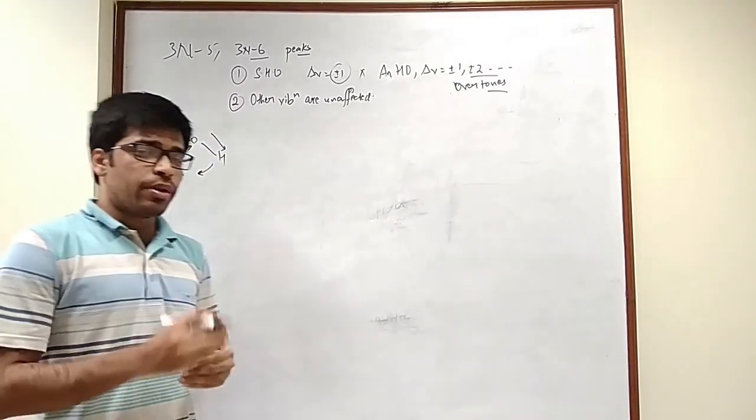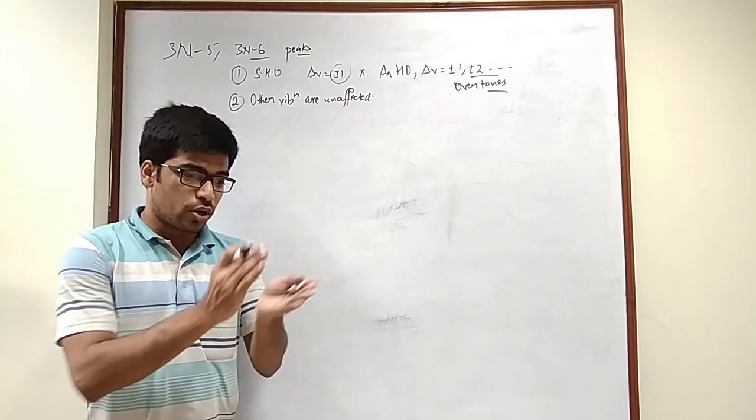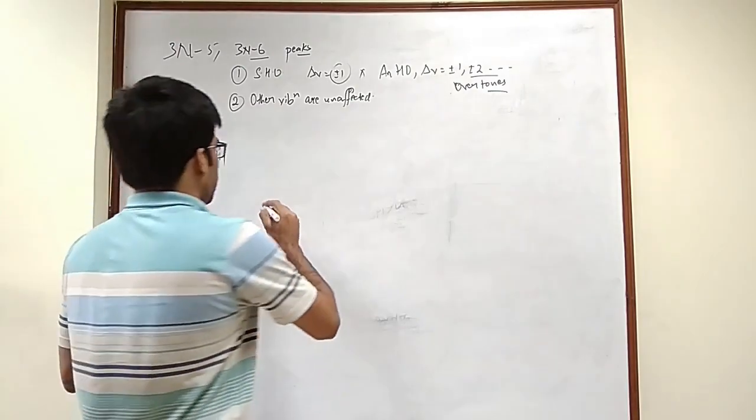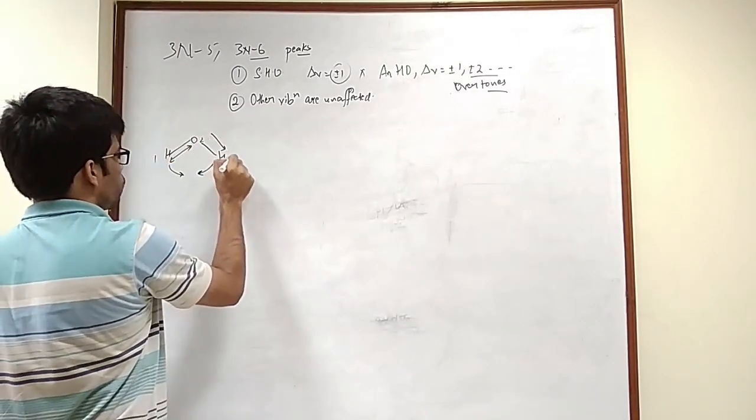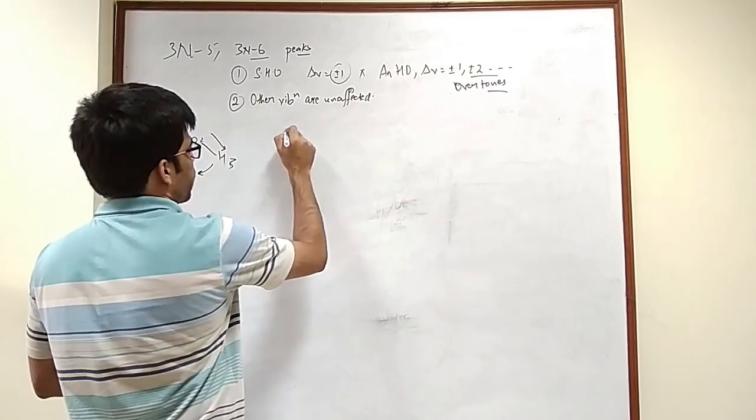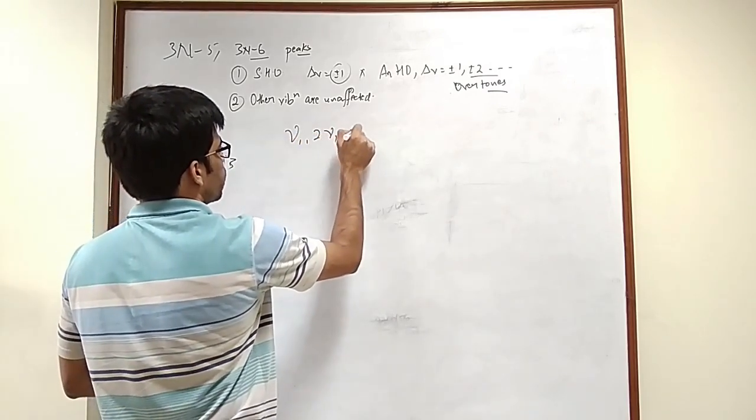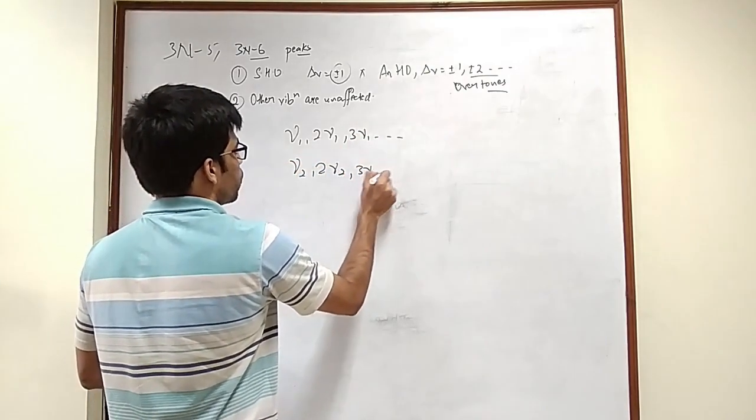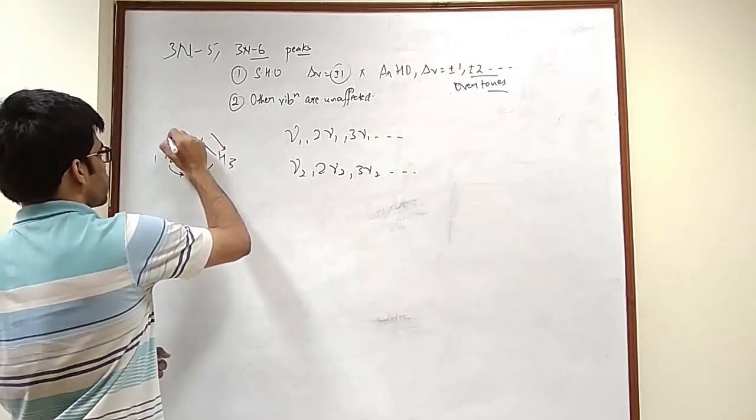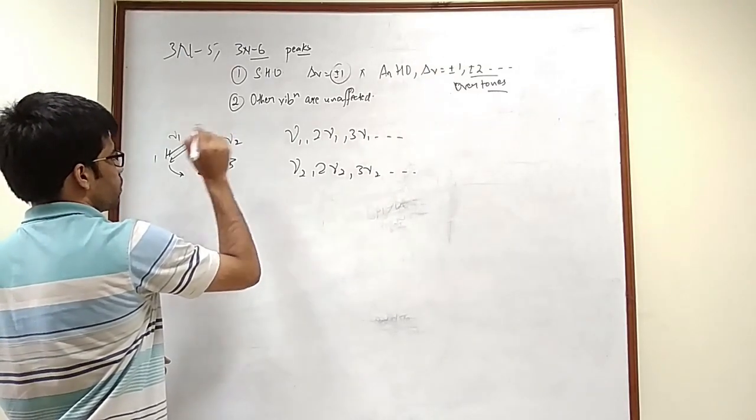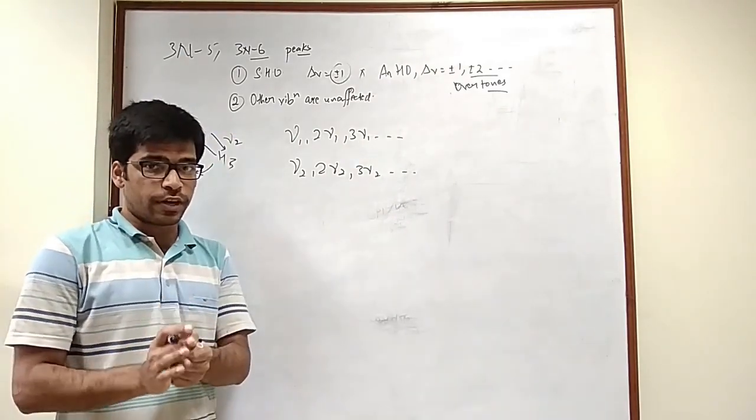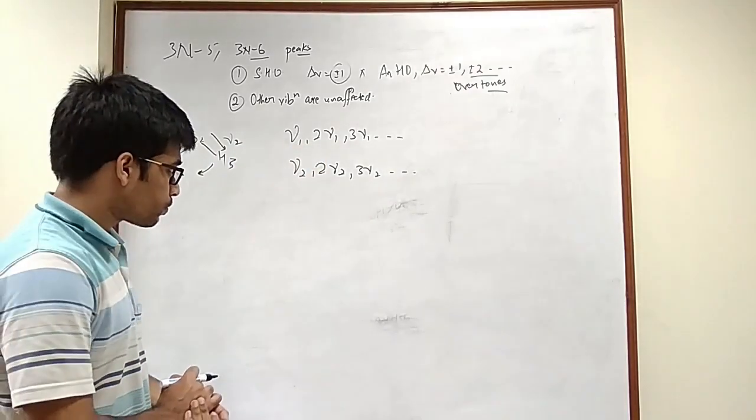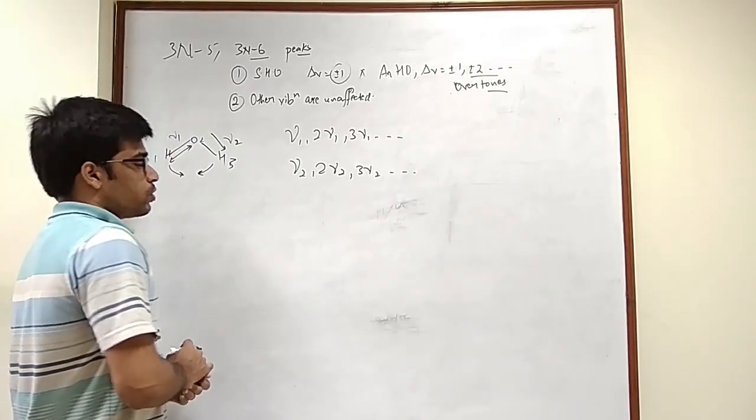And at the same time the vibrations are also getting affected. Other vibrations are getting affected because of one particular vibration. So let's say I have mu1, 2mu1, 3mu1 like this, or mu2, 2mu2, 3mu2 like this. Let's say mu1 is this and mu2 is this only for the vibration. I may have overtones and fundamental, first overtones and second overtones like this.